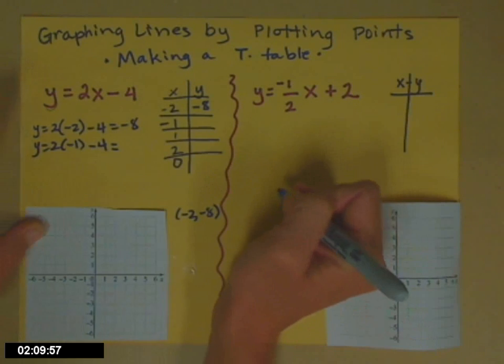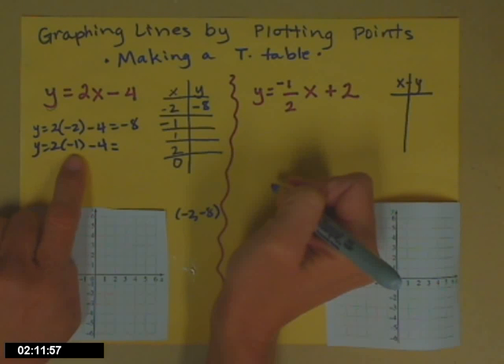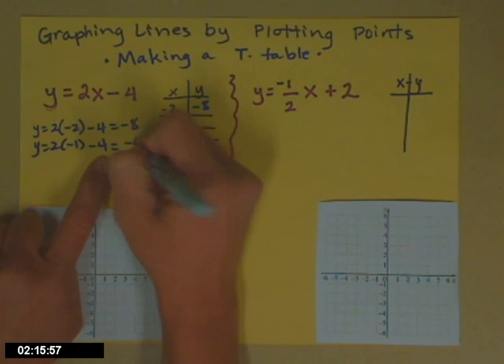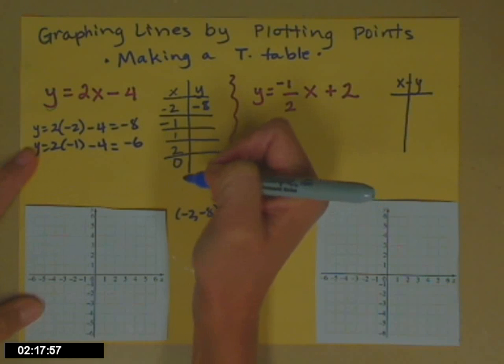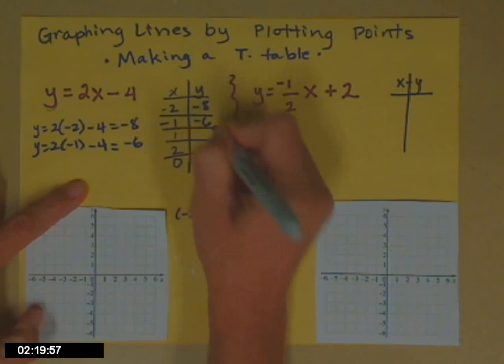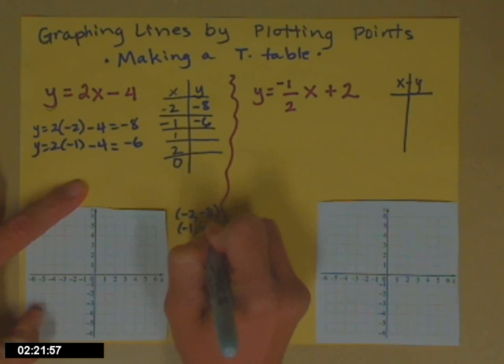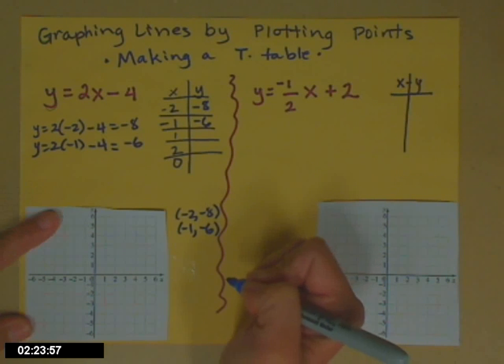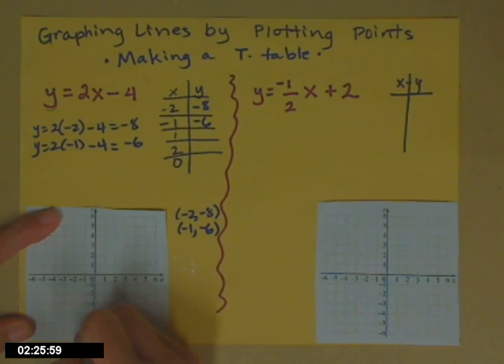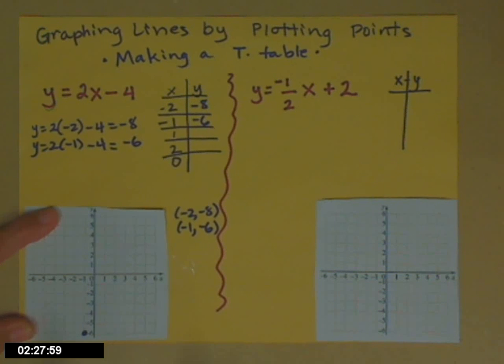What's that one? So now I have 2 times negative 1, negative 2, minus 4 more, negative 6. So that point, negative 1, negative 6. Okay, that one I can actually put on my graph. There it is. Remember, negative 1 to the left, 6 down.